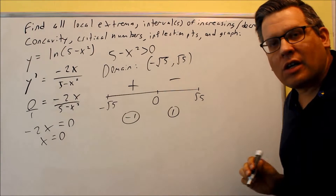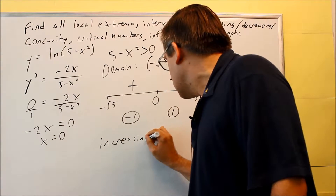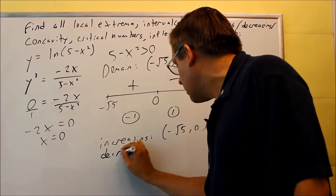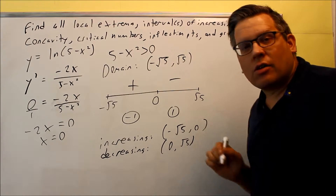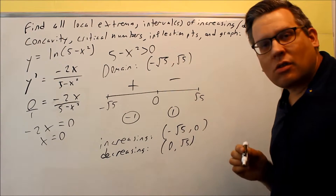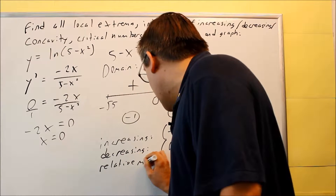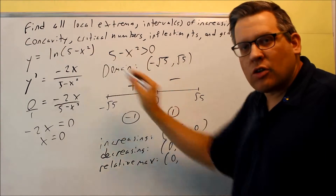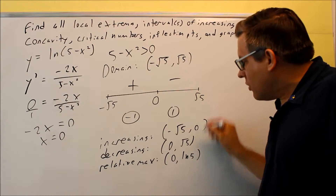From this, I can tell the increasing and decreasing intervals. Increasing is from negative root 5 to 0, and decreasing is from 0 to root 5. The first derivative test tells us there's a relative maximum at x = 0. Plugging 0 into the original function gives ln(5), so the relative max is at (0, ln 5).